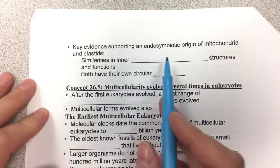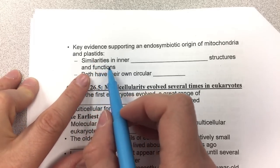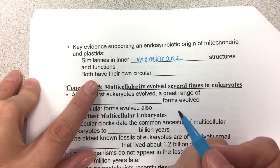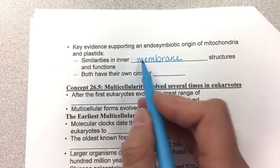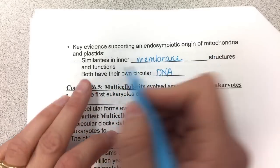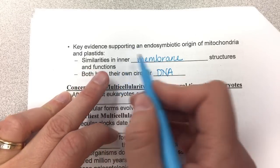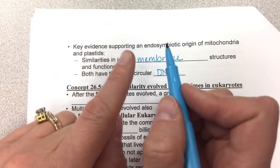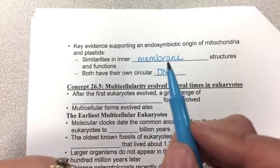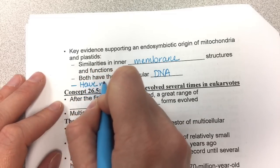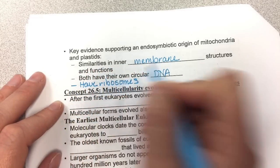Key evidence supporting endosymbiotic origin of mitochondria and plastids includes similarities in inner membrane structures and functions. Both chloroplasts and mitochondria have their own circular DNA, like bacteria, and they have intermembrane structures. They also both have ribosomes. This is our bridge between prokaryotic and eukaryotic cells.